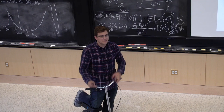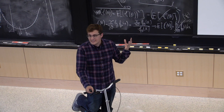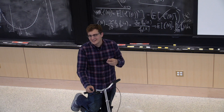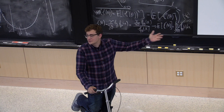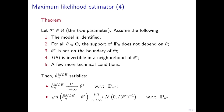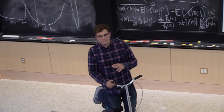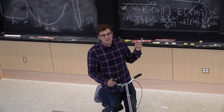The MLE can be anything — in many instances it's just an average, which is slightly boring. But there are cases where it's not an average, and we must use this theorem rather than the central limit theorem directly. More importantly, even if it is an average, the theorem tells you the variance is given by the Fisher information matrix, so you don't have to compute it separately.